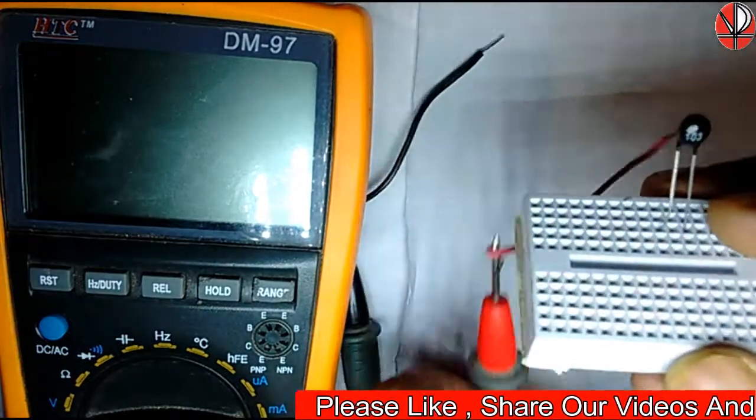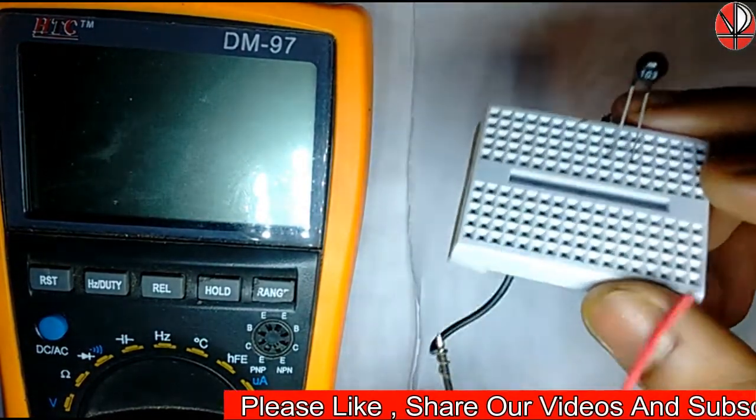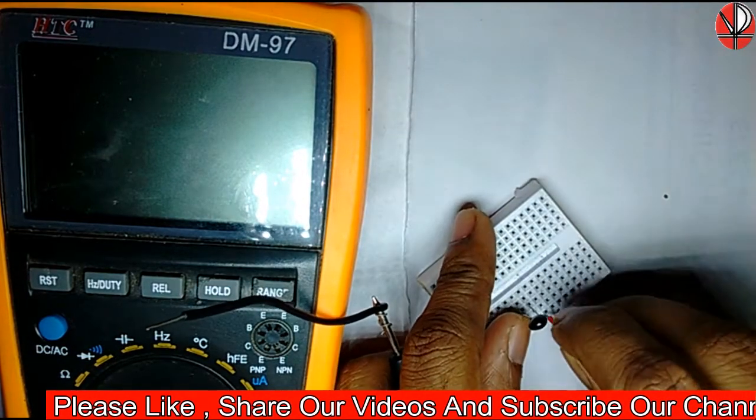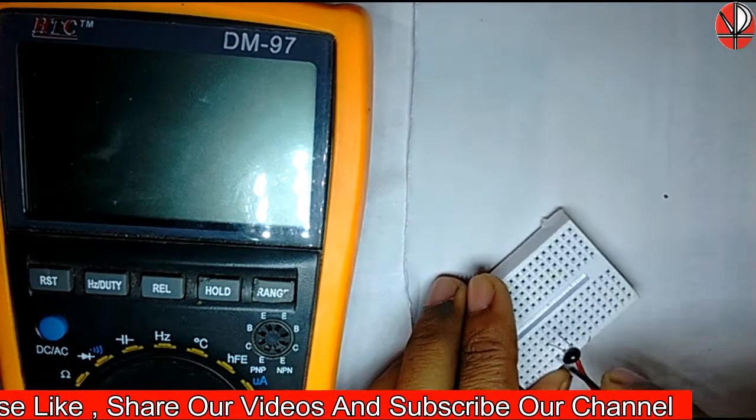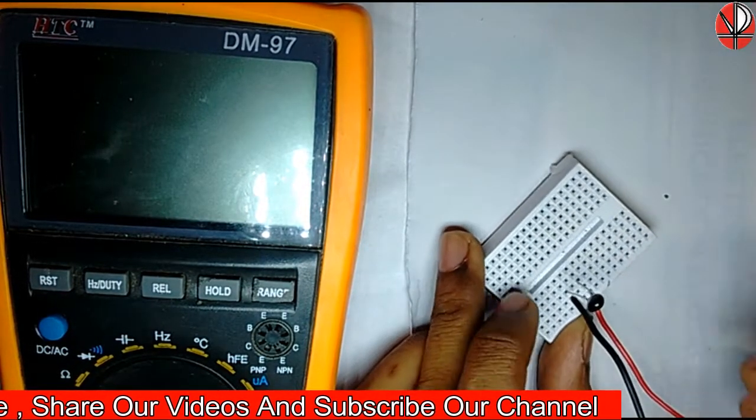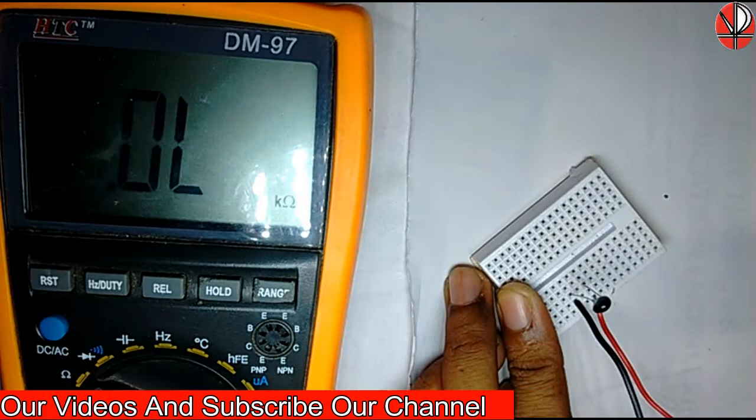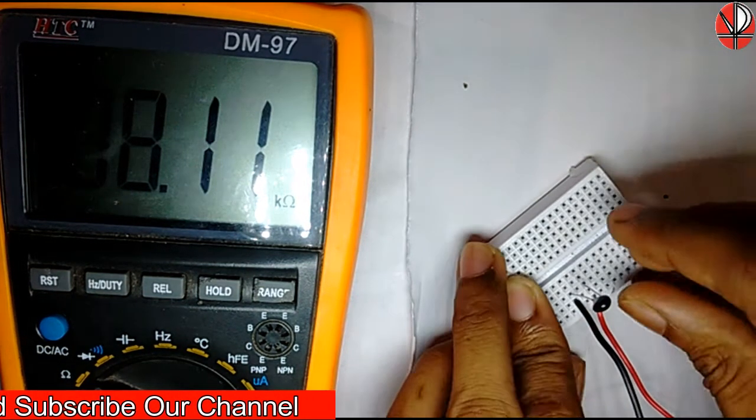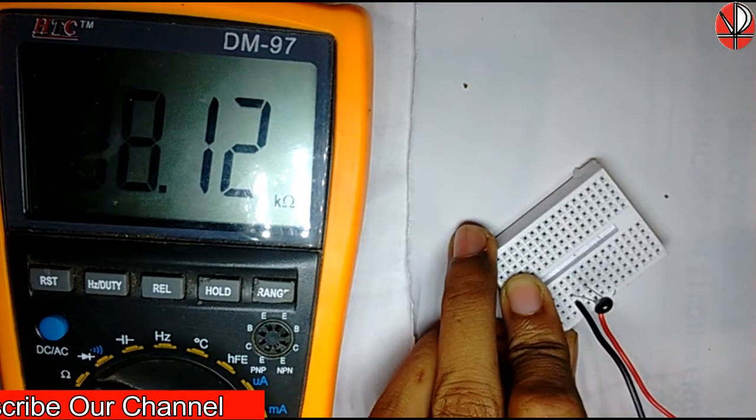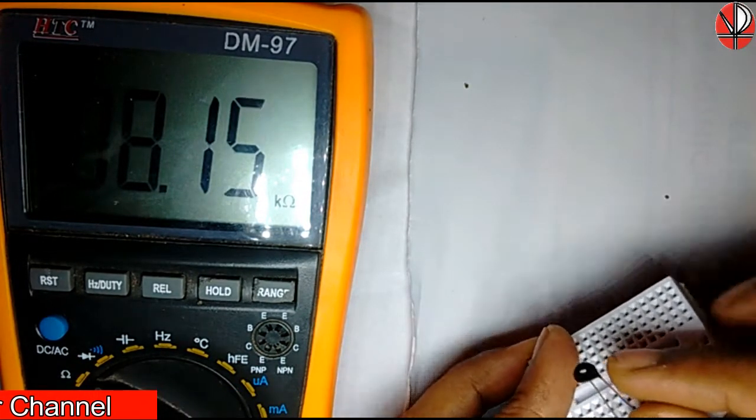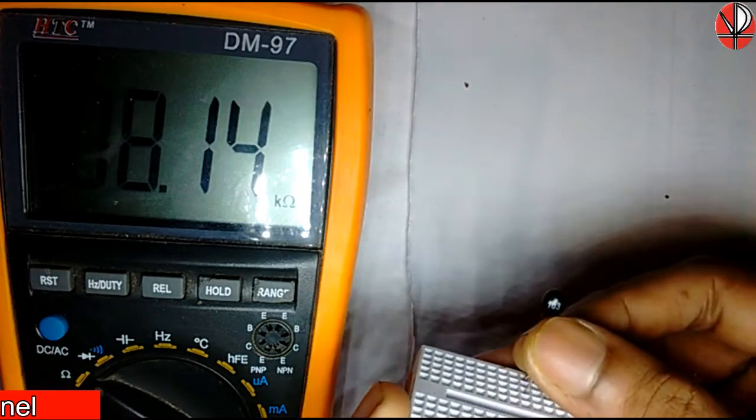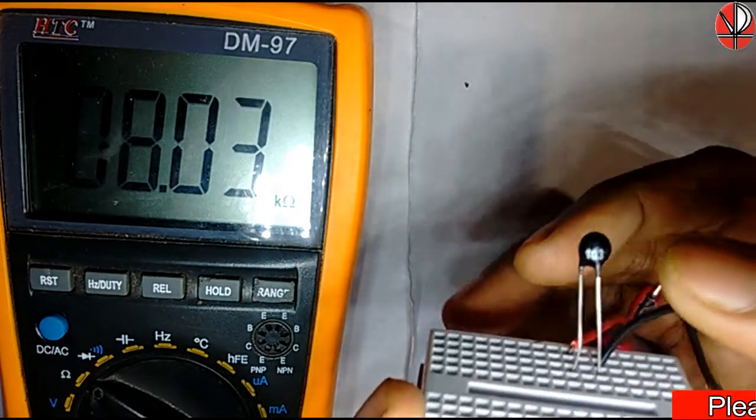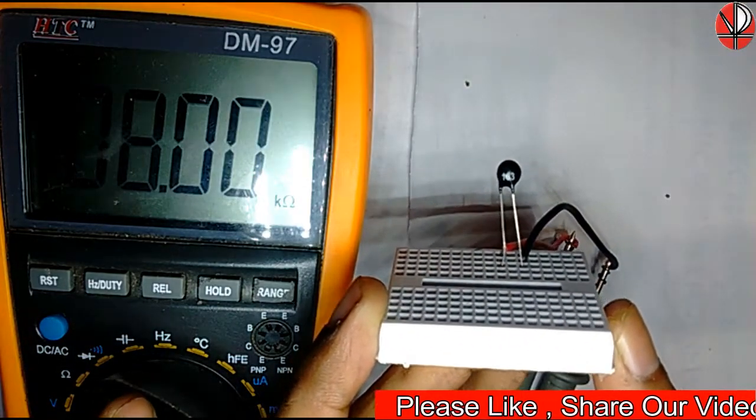Let's see this in practice. I will connect these two terminals of the multimeter across this thermistor. You see in the multimeter that its resistance is around 8K. This is 103, which means this is a 10K thermistor. Now its resistance is 8K.